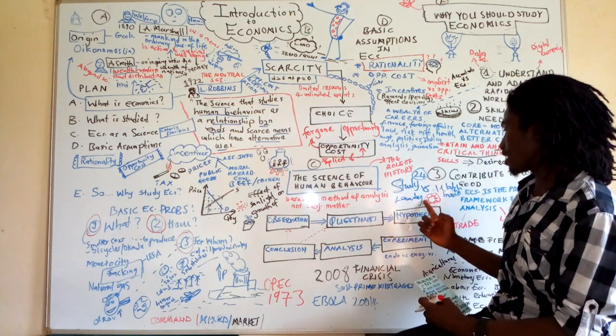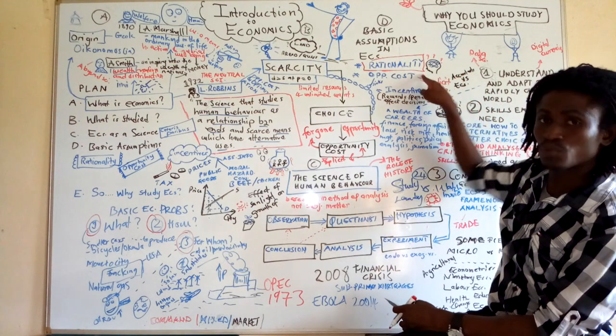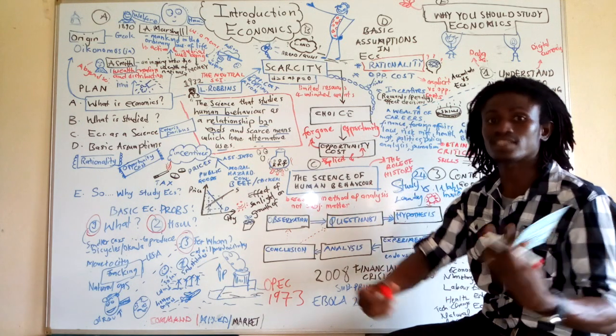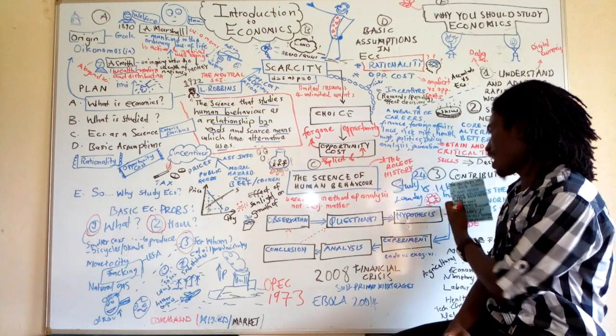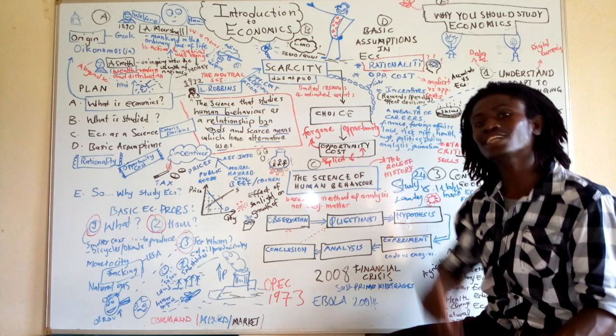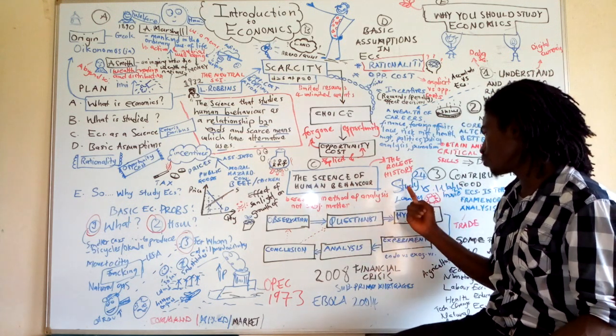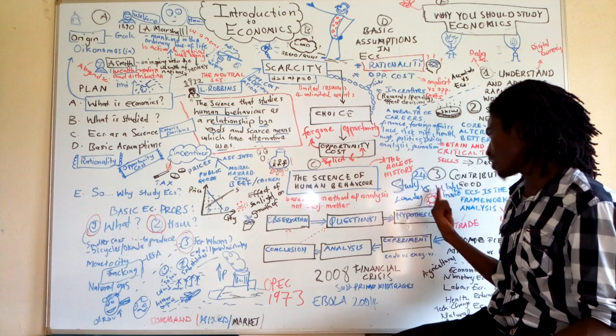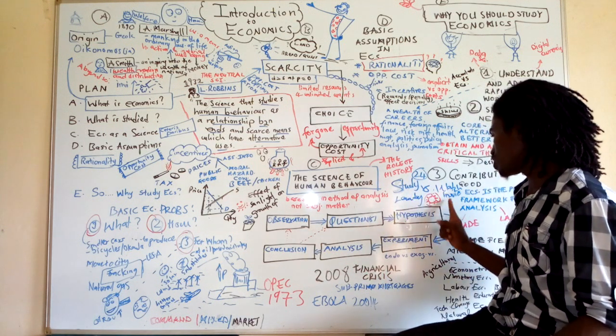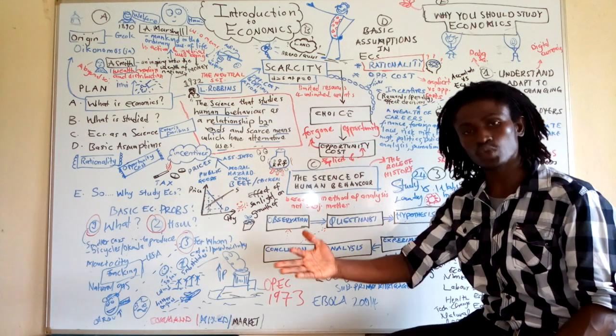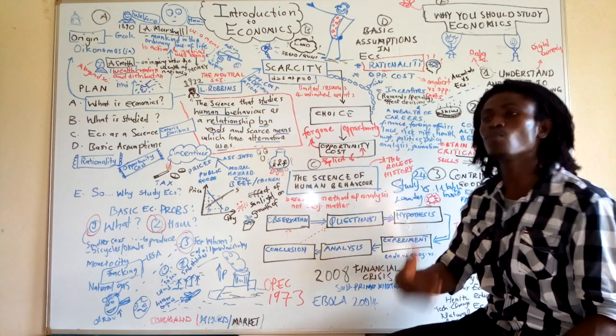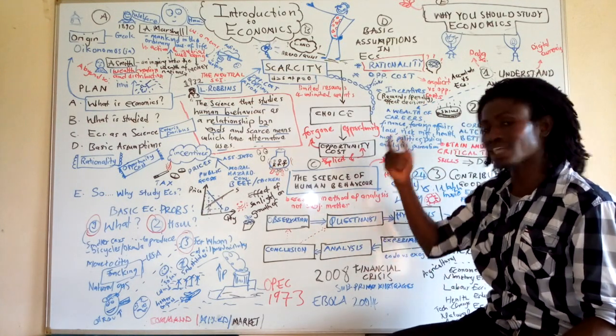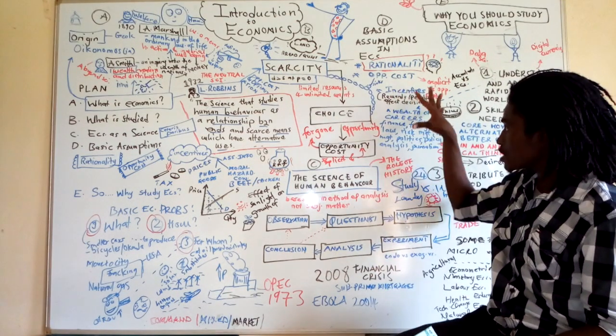When we look at marginal decision making together with rationality, we see that we should only take actions whose benefits exceed the cost. In terms of marginal cost and benefits, we should only take an action if the extra benefits exceed the cost. We should study more if the benefits of studying exceed our best alternative, like watching a movie. We compare that extra hour - what is more beneficial? Standard rationality assumption tells us we should take an action only if the benefit exceeds the cost.